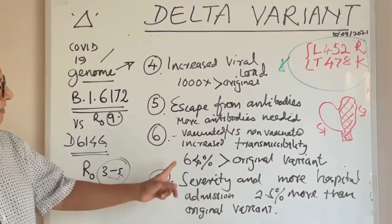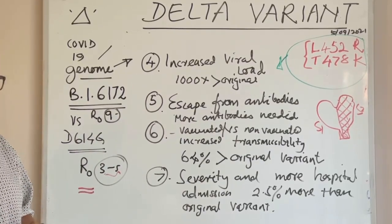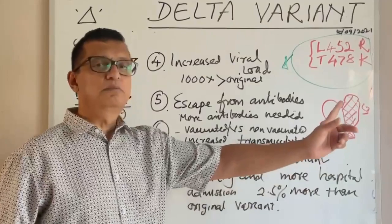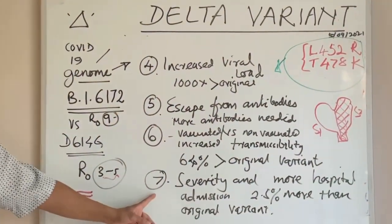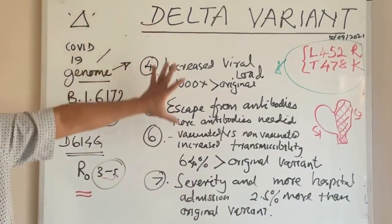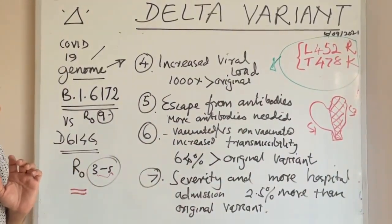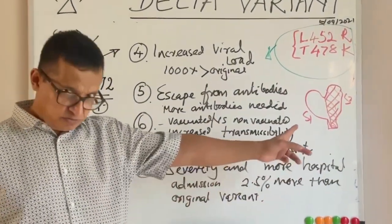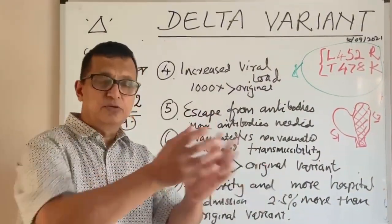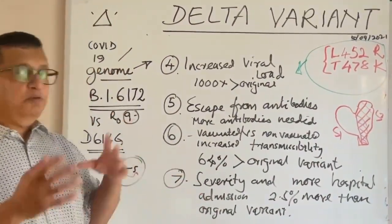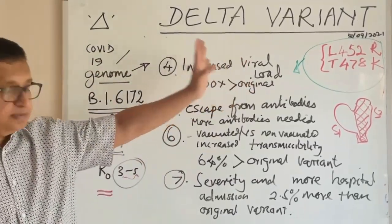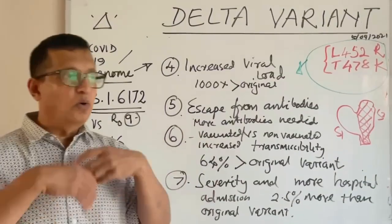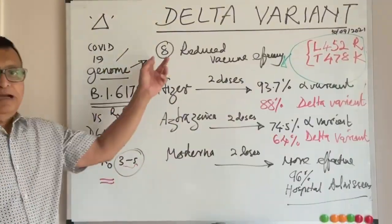The seventh factor is that the delta variant is 64% more transmissible than the original variant. Due to all these factors, severity is high and hospital admissions are 2.6% more than with the original variant. More people are admitted to hospital, the viral load is 1,000 times higher, and both vaccinated and non-vaccinated, symptomatic or asymptomatic individuals all transmit the disease.